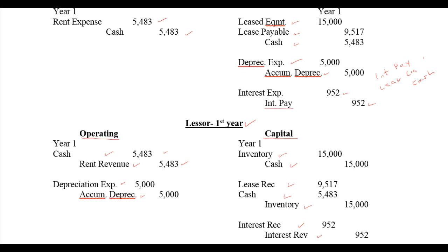So under a capital lease, the lessee owns and depreciates the equipment — the lessor does not. Under an operating lease, the lessor maintains ownership and depreciates it, while the lessee simply rents the equipment for a period of time. That gives you a chance to review and compare the entries for capital leases and operating leases from both the lessee's and lessor's perspectives. Thanks for joining me, and we'll talk to you soon in Part 3.